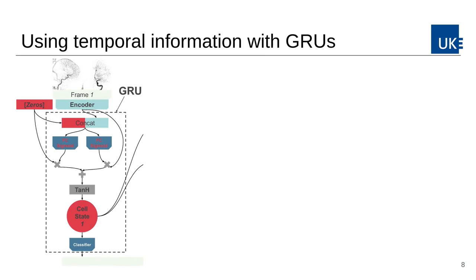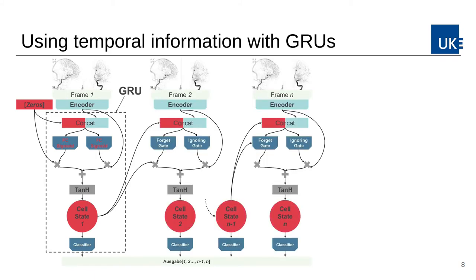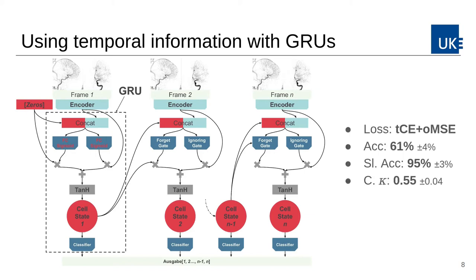Until now, the temporal aspect of the data has been neglected. To process the DSA time series, we use a gated recurrent unit consisting of an update and forget gate as well as a classifier and cell state. Since the annotation holds true only after seeing the last frame, that frame alone is used to calculate the loss and update the network weights, leading to an accuracy of 61%, a sliding window accuracy of 95%, and a Cohen's Kappa of 0.55.